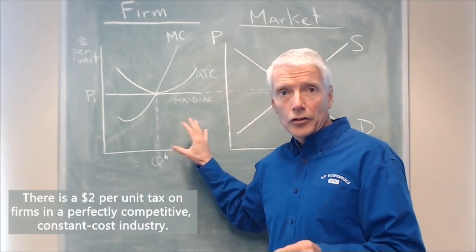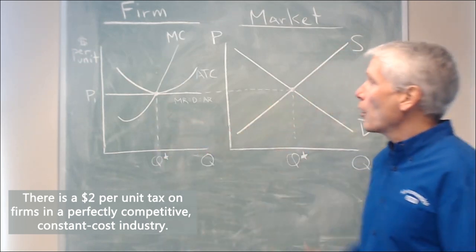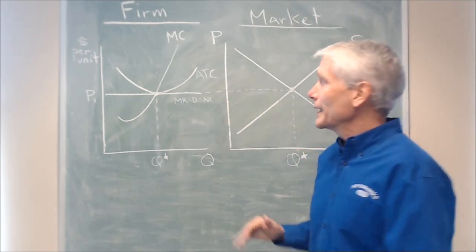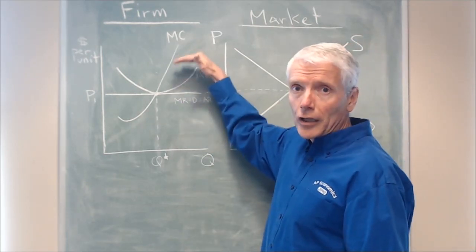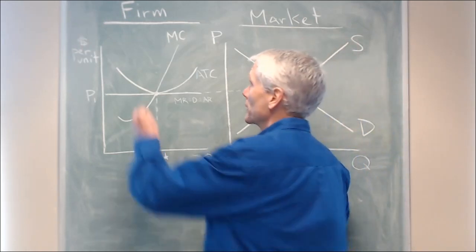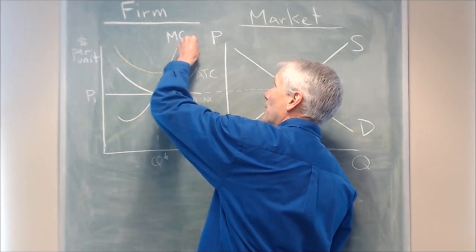So suppose that there's a two dollar tax on each unit for this firm in this market. Well that's going to increase the cost of producing each unit. It's going to increase the average cost and the marginal cost each by two dollars per unit. So we shift each of those curves up by two dollars.